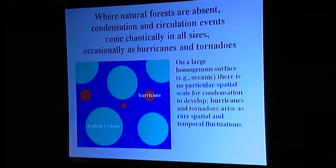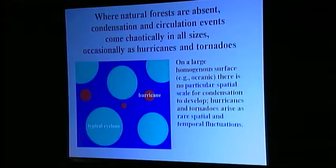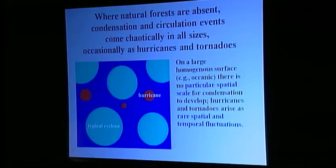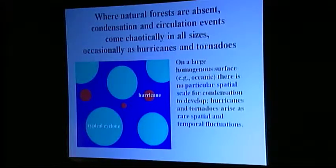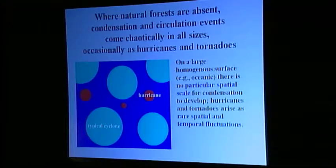This is, however, impossible if the surface is homogeneous with respect to condensation. For example, on a large oceanic surface far from the coast, there is no preferential place where condensation could occur — no particular length scale. In the result, condensation and circulation events come randomly in all sizes, as large cyclones as well as compact hurricanes and tornadoes. The hurricane arises as a spatial and temporal fluctuation of the condensation process in the absence of a preferential spatial scale.